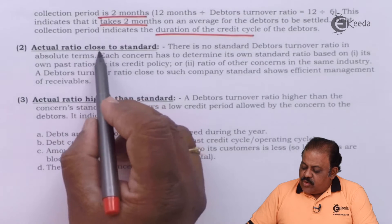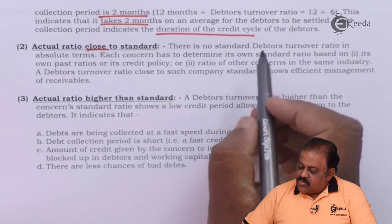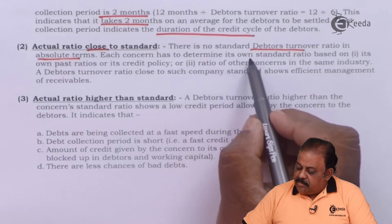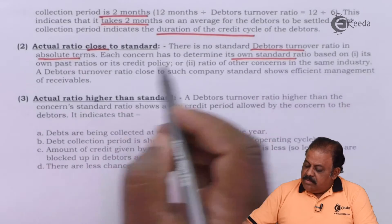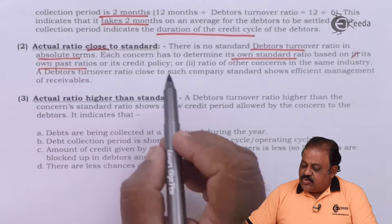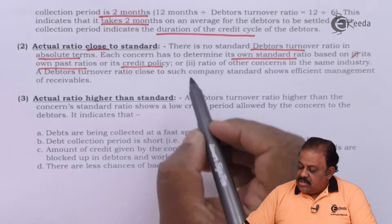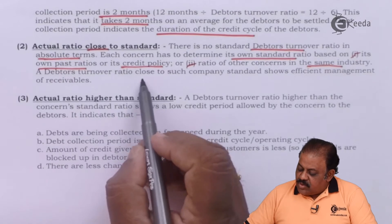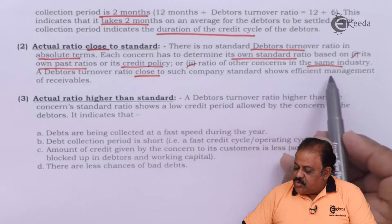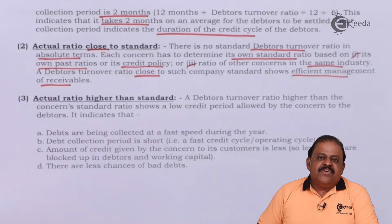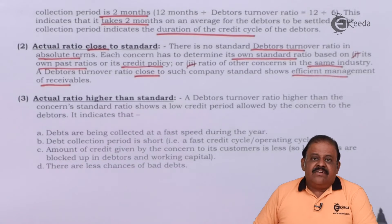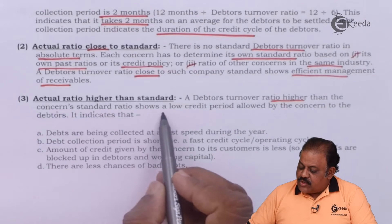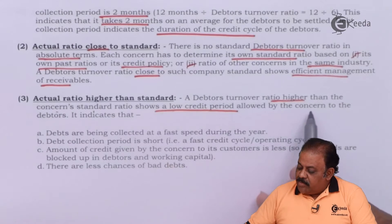There is no standard debtors turnover ratio in absolute terms. Each concern has to determine its own standard ratio based on its own past ratios, credit policy, or ratios of other concerns in the same industry. A debtors turnover ratio close to such a company standard shows efficient management of receivables. A debtors turnover ratio higher than the concern's standard ratio shows a low credit period allowed by the concern to debtors.